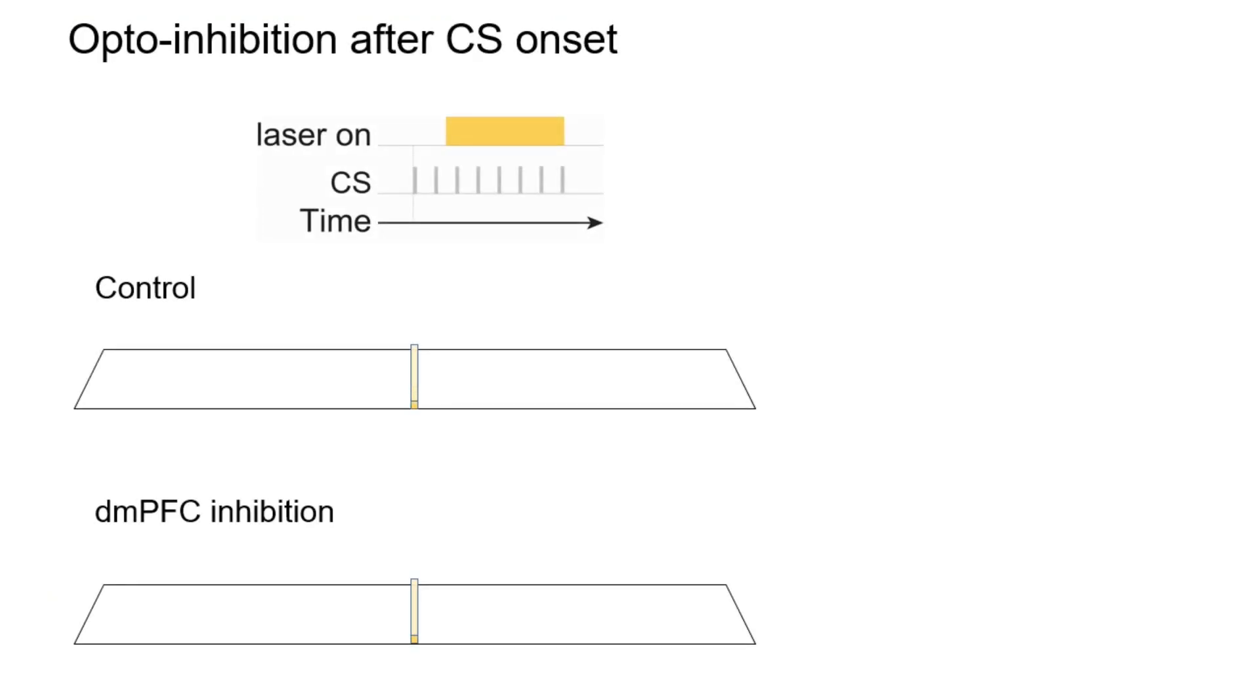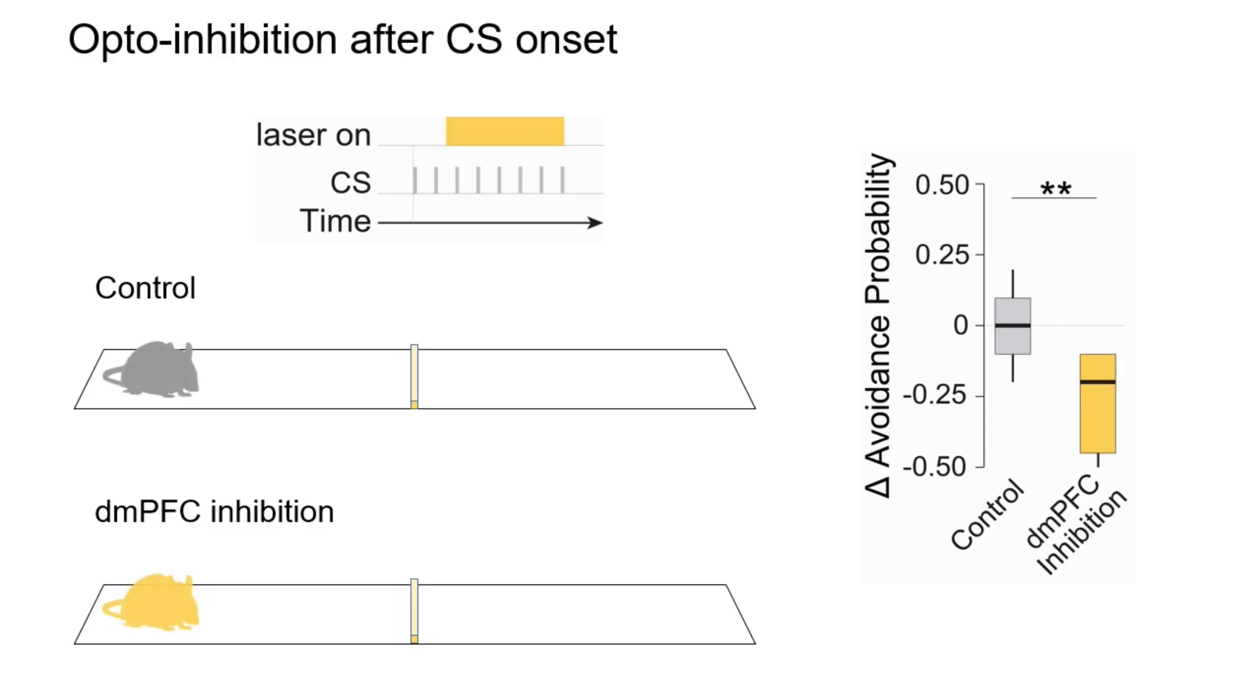Also, when we inactivate the PFC after the onset of the CS, we reduce the avoidance response probability, confirming that there is dynamic processing in the dorsal medial prefrontal cortex linking threats with initiation of defensive actions.